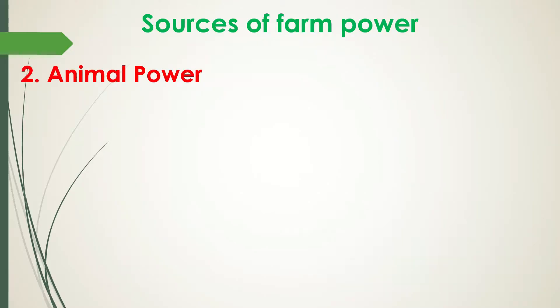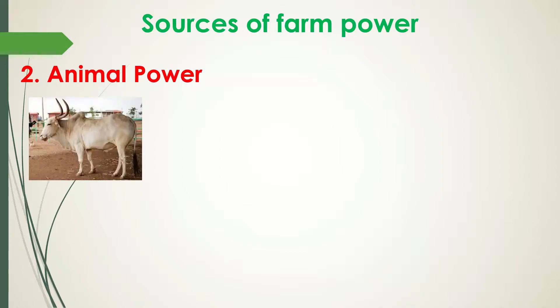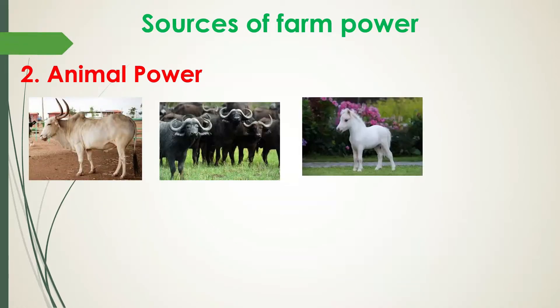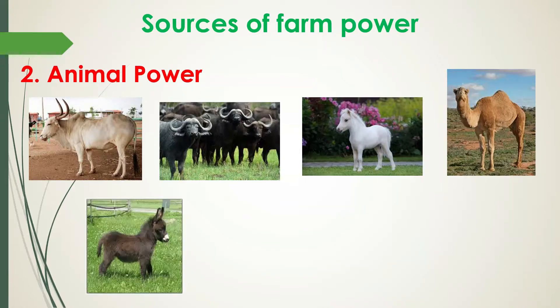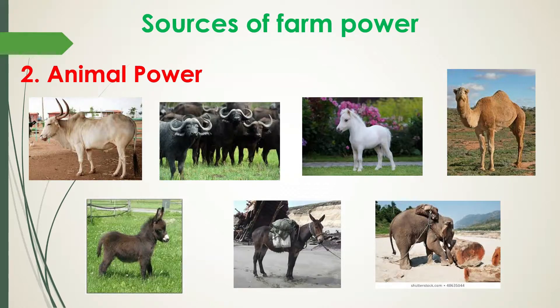Let's go to animal power. This is the most important source of power on the farm all over the world, particularly in developing countries. It is estimated that nearly 80% of the total draft power used in agriculture throughout the world is still provided by animals. These working animals include bullocks, buffaloes, camels, horses, donkeys, mules, and elephants.